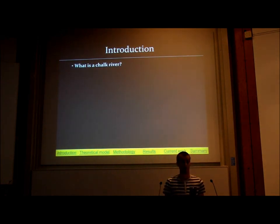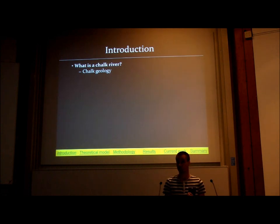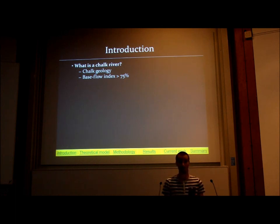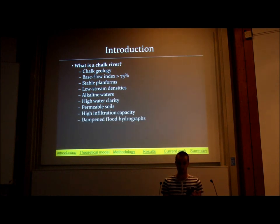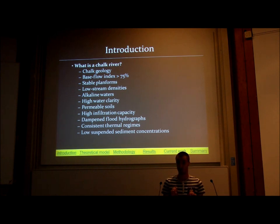So, what is a chalk river? Well, a chalk river isn't defined by any river that contains a cow. It's actually defined by two key characteristics: chalk geology — bedrock laid down around 65 to 100 million years ago — and a base flow index of greater than 75 percent. The base flow index is the percentage of discharge that originates from groundwater, so water from aquifers and springs underneath the river. Everything else on this list is very important ecologically, but those top two characteristics give you the technical definition.